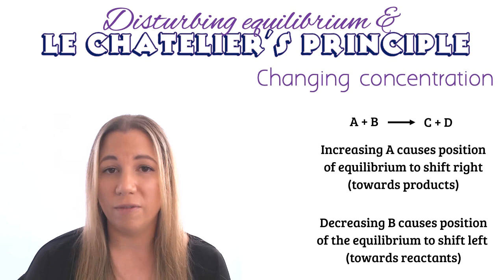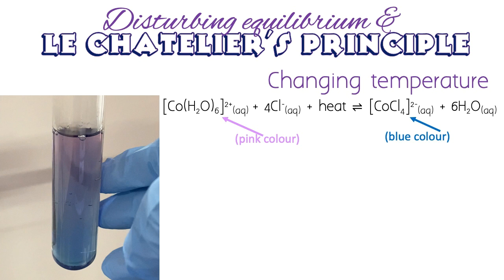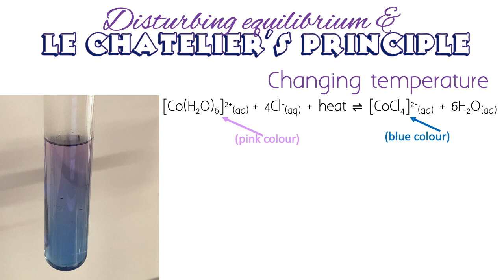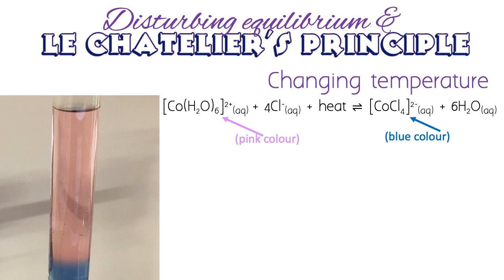Let's look at an actual example using the reaction between cobalt chloride and hydrochloric acid. If we add water to this system, the equilibrium shifts to the left. The water causes dilution — a decrease in concentration of the hydrated cobalt ions — so the equilibrium shifts left to reduce this stress while also using up the excess water added. Since the hydrated cobalt ions are pink, we see this colour change in the system.